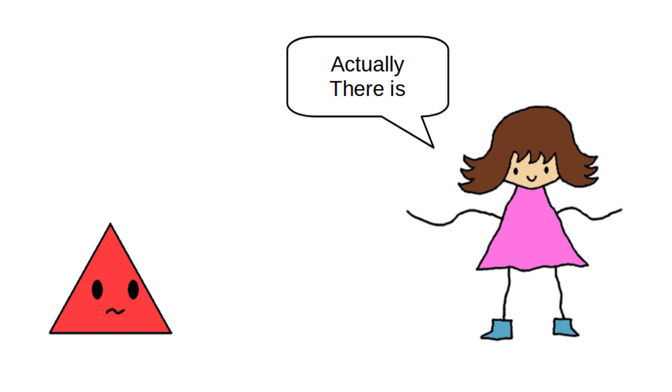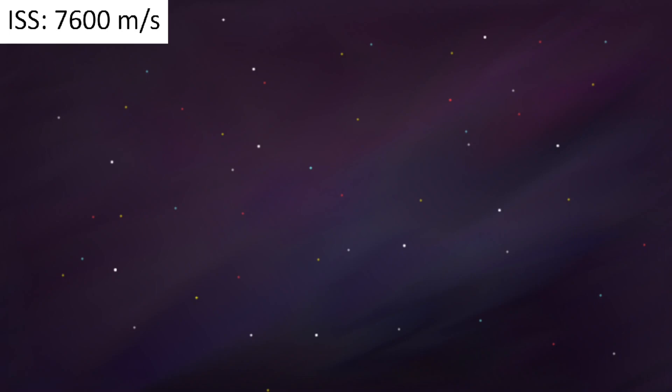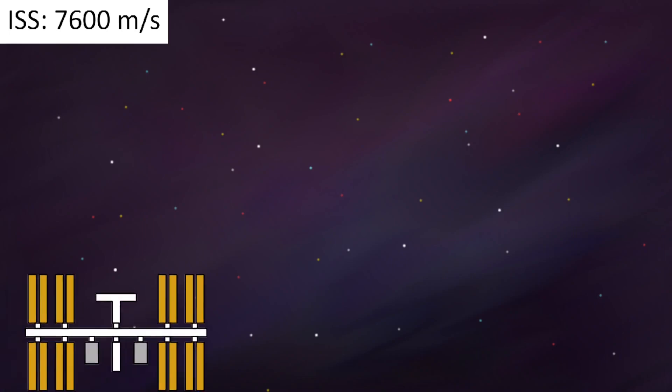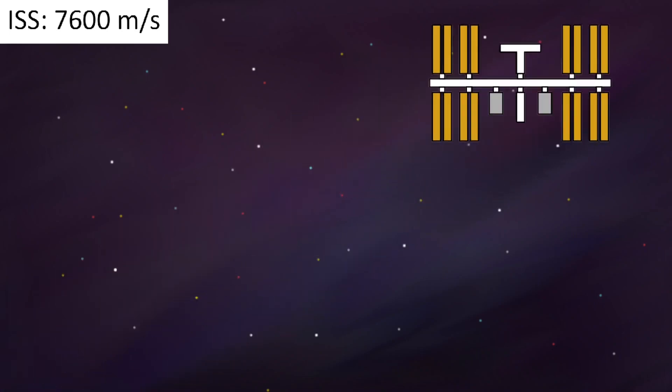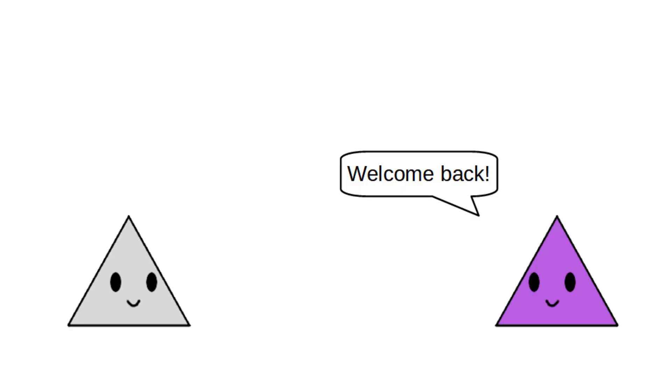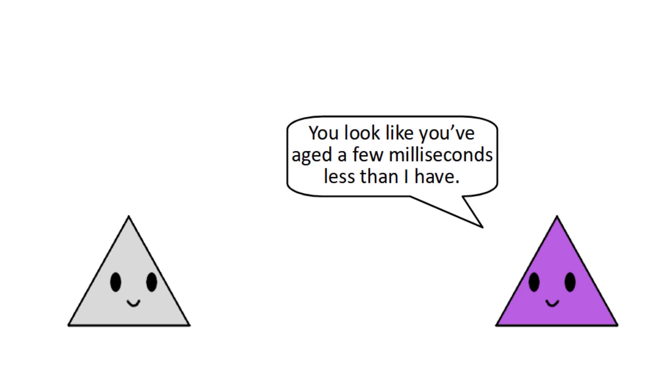For example, the International Space Station orbits Earth very quickly at a speed of 7600 meters per second. Because of this, people who spend time up there literally age more slowly. When they come back to Earth, they will have aged by a few milliseconds less than those who stayed on Earth.